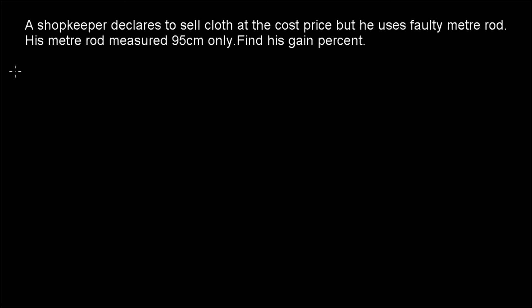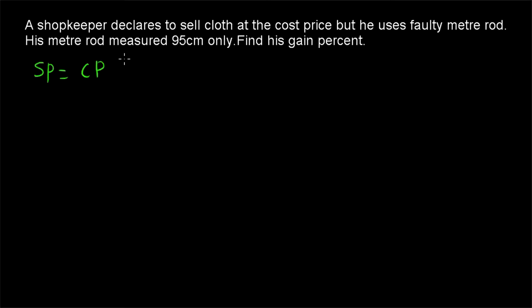A shopkeeper is declaring that he is selling cloth at cost price, so his selling price is equal to cost price. Everyone will come to buy from that shop expecting a fair deal. But what is the trick behind this? He is using a faulty meter rod — so instead of 1 meter, his rod is measuring only 95cm. What is his gain percentage?